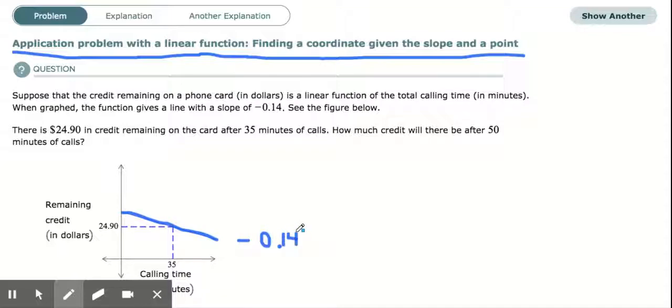negative 0.14. Now suppose the credit remaining on the phone card in dollars. As you can see down here, the remaining credit is our y value and our calling time in minutes is our x value. So what this graph tells us is that after 35 minutes there is $24.90 left on this calling card.